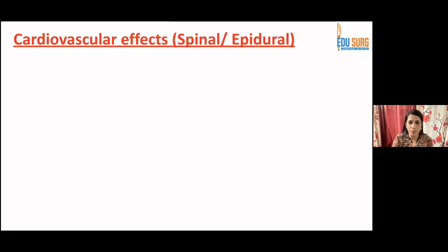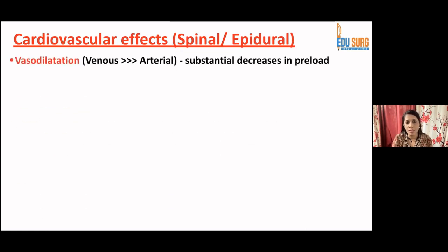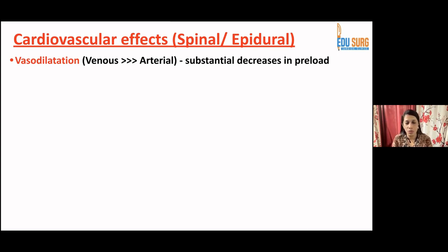Moving on to the cardiovascular effects of spinal and epidural anesthesia: the most predominant effect is vasodilatation — venous much more than arterial — restricted to the level of the block. This is very important: if spinal or epidural anesthesia is the best option but hypotension must be avoided, blocking too many dermatomes must be prevented. Going above T10, and especially above T4, will cause significant cardiovascular effects. It is critical to know how much drug volume to give to avoid reaching dangerously high levels. Spinal and epidural both cause a significant decrease in preload, vasodilatation, and hypotension.